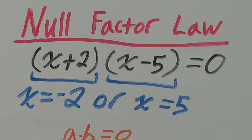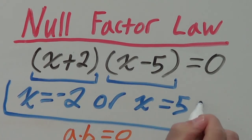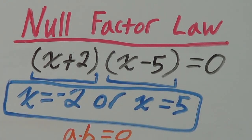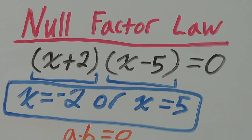The Null Factor Law could run there as well, which means the solution to this quadratic is x equals negative two or x equals five. This is an example of how we can use the Null Factor Law to solve quadratics.